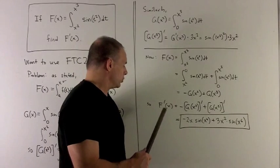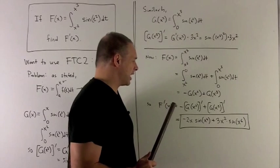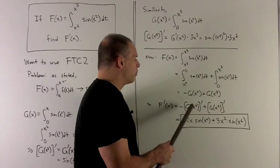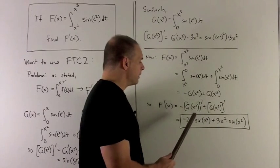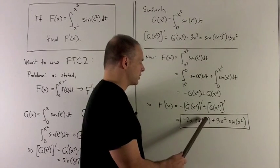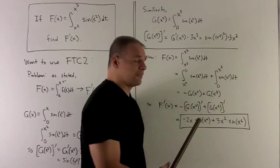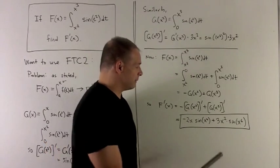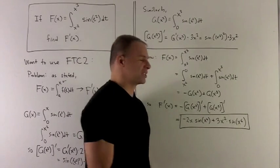Now, the derivative of F is just going to be equal to the derivatives of each piece added together. So we wind up with what I just calculated before. G of X squared prime is going to give me 2X sine X to the fourth. We have a minus sign out in front. And then G of X cubed prime is going to give me my 3X squared times sine of X to the sixth.